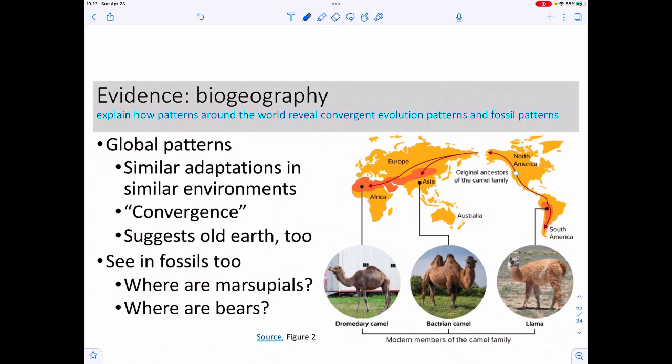When we look at how things are distributed around the world, or what we call biogeography, we also start to see patterns. This is where more of that convergence starts to kick in. Similar adaptations or similar solutions are found in similar environments.